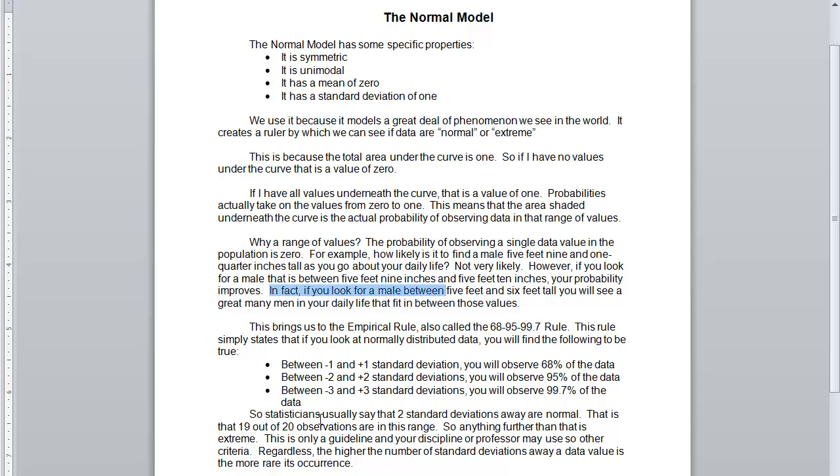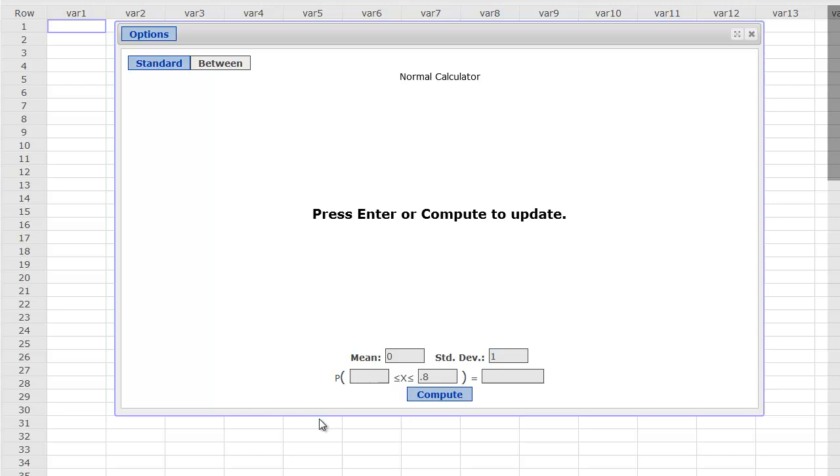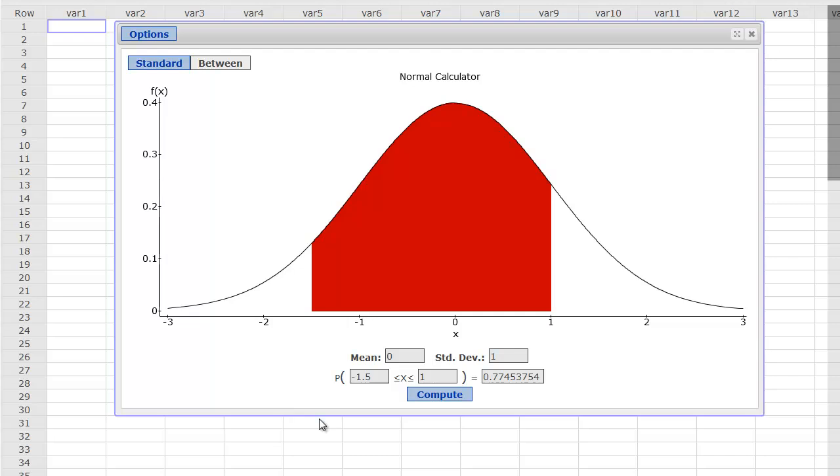In fact, if you look for a male between 5' and 6' tall, you'll actually see a whole bunch of men in your daily life that will fit between those values. 5' is below the mean, and so let's say that's negative 1.5 standard deviations. 6 feet is about 1 standard deviation. So if I compute that, men that are between 5 feet and 6 feet is actually going to be about 77 out of 100 men, or 77%, or a probability of 0.77.